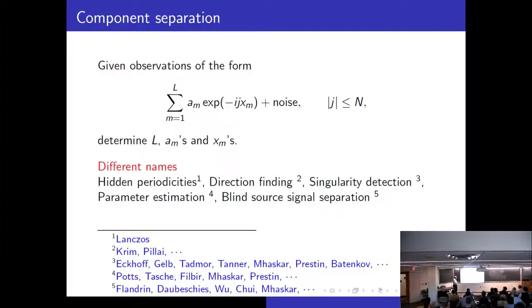And this is a very old problem. It appears already in the book of Lanczos on Applied Mathematics under the name of hidden periodicities. It's also called direction finding in phased array antennas. There are a lot of papers by Krim and even a book by Pillai. Then it's called singularity detection, in which there are many people here who have worked also. Then it's also called parameter estimation and blind source signal separation more recently.